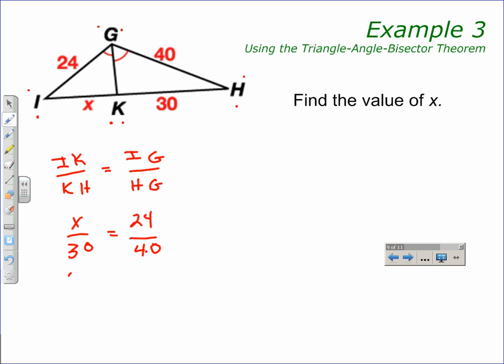40 times x will give 40x. And 30 times 24 will give 720. Divide each side of that by 40. x is equal to 18.